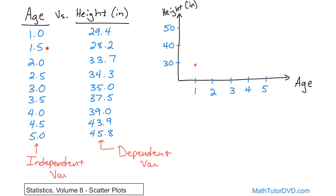So 1 comma 29.4 — we put a dot just below 30. Then 1.5 has a corresponding height of 28.2, which goes down a little bit. A 2-year-old at 33.7 is just above 30. Then 2.5 at 34.3, a little bit higher. Then 3 at 35 even — right in the middle. Then 3.5 at 37.5, up higher. Then 4 at 39, just shy of 40. Then 4.5 at 43.9, a nice jump up. And the last data point is the 5-year-old measured at 45.8.